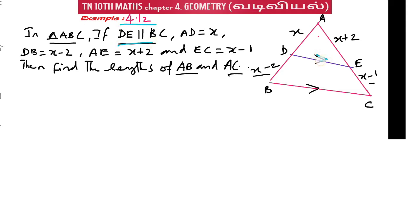In triangle ABC, DE parallel to BC, AD equals x centimeter, DB equals x minus 2 centimeter, AE equals x plus 2 centimeter, and EC equals x minus 1 centimeter. Now AB and AC are the lengths to find.